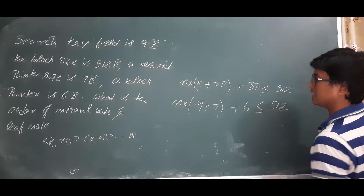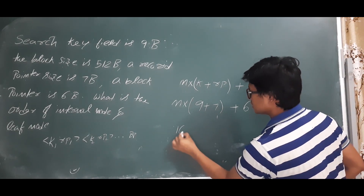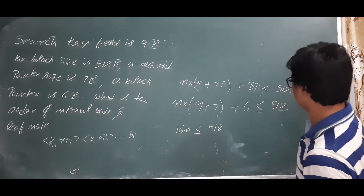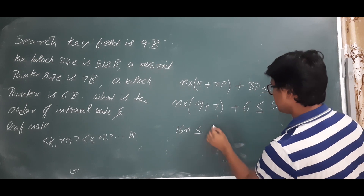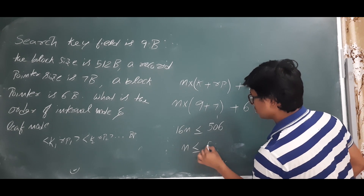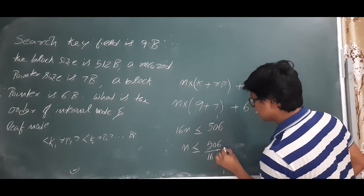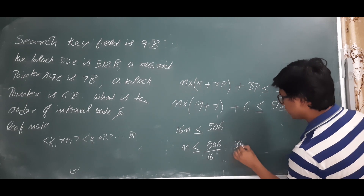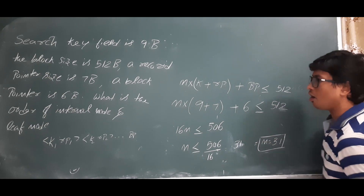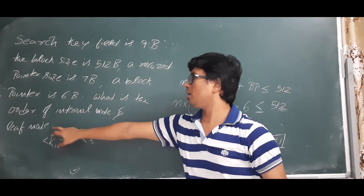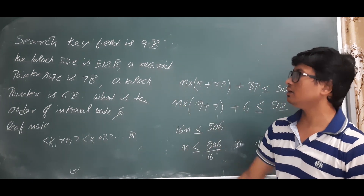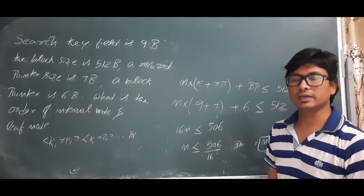So 16n ≤ 506, which gives n ≤ 31.6, so n equals 31. Therefore the order of the internal node is 34 and the order of the leaf node is 31. I hope you have understood this numerical. Thank you so much.